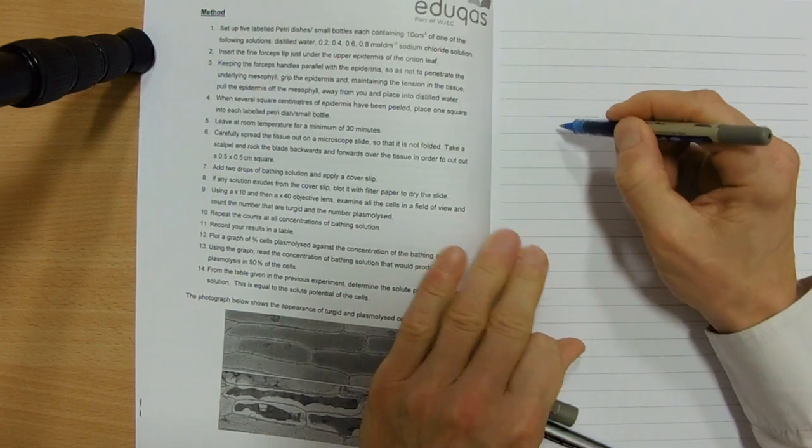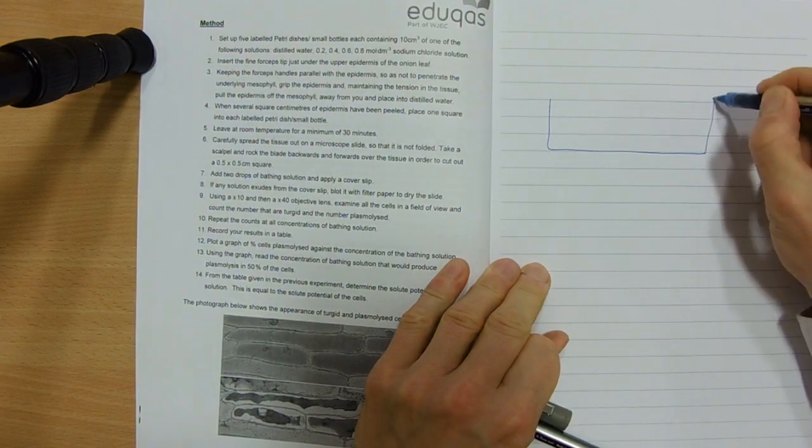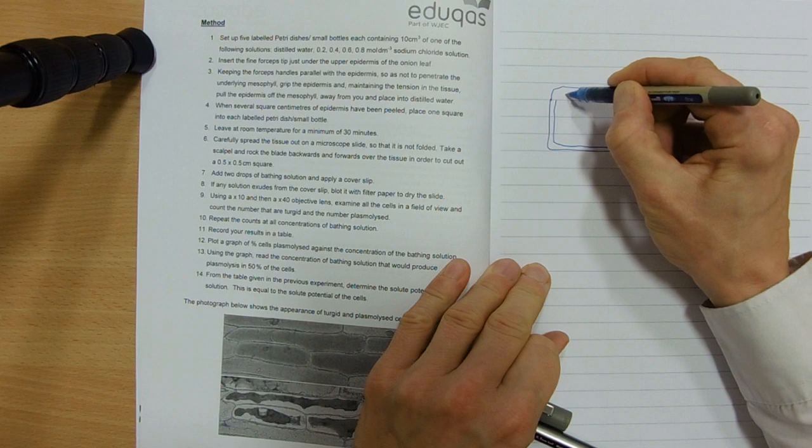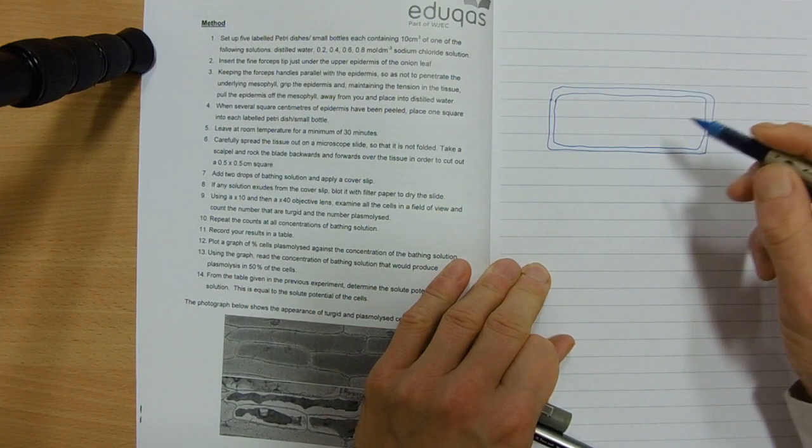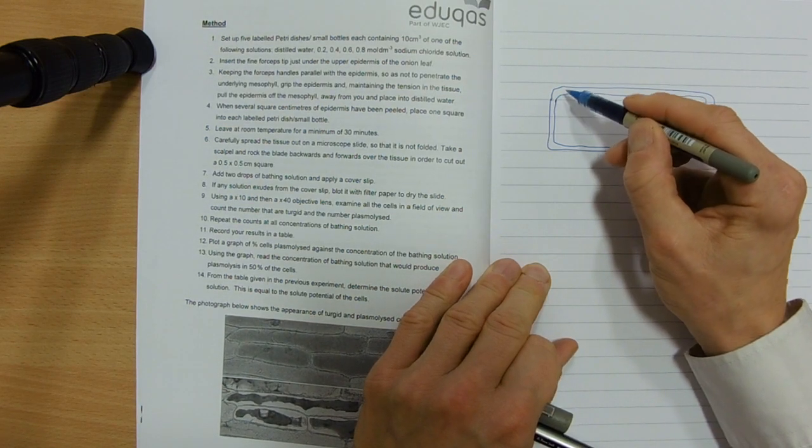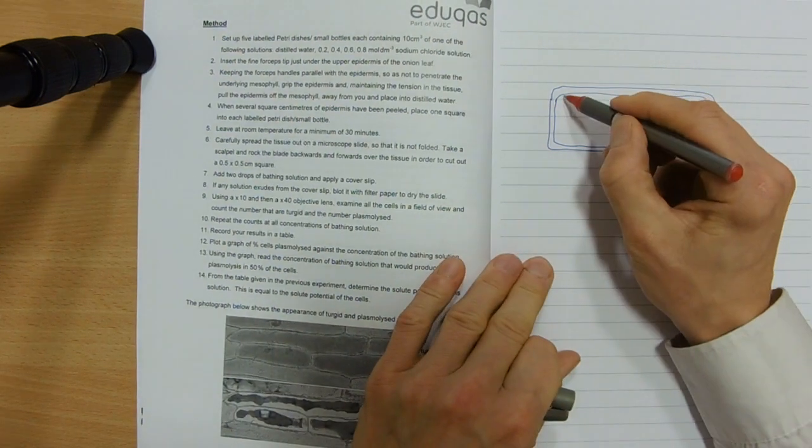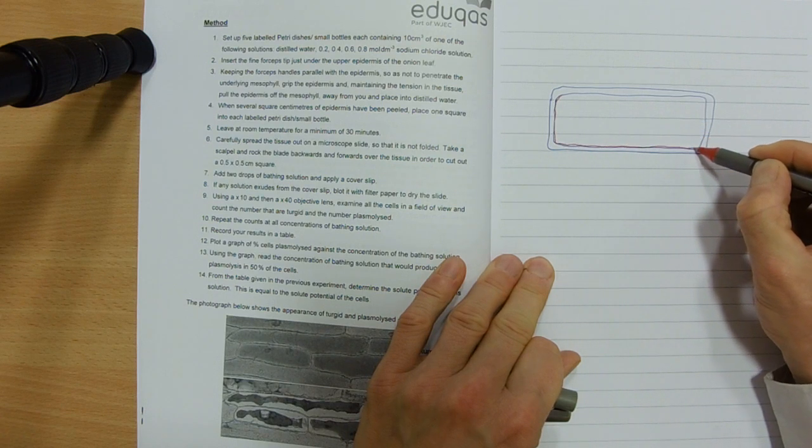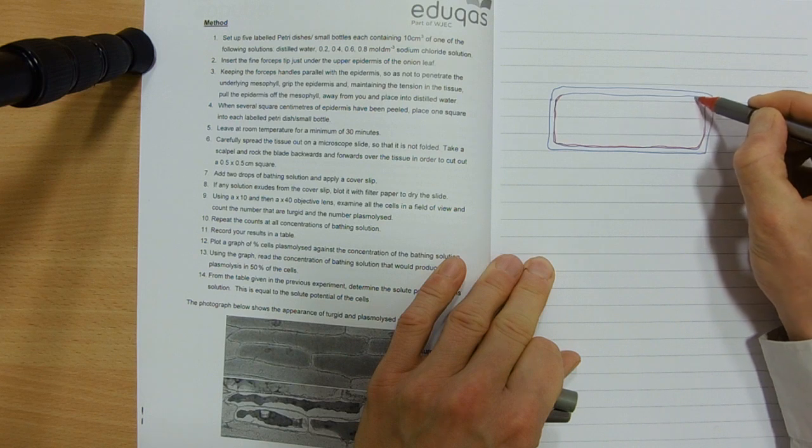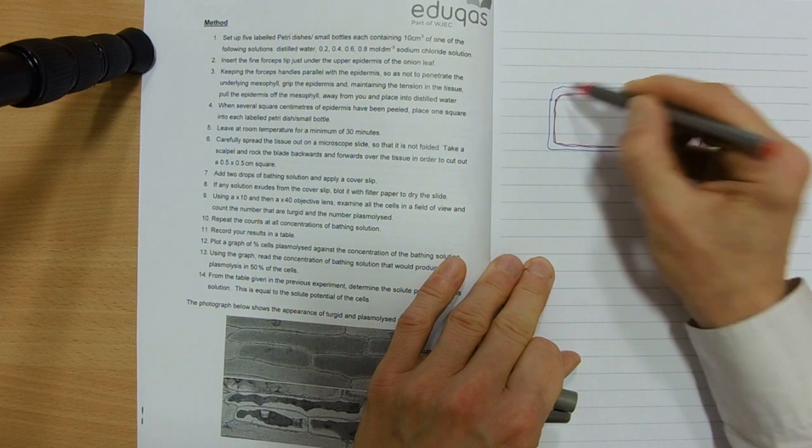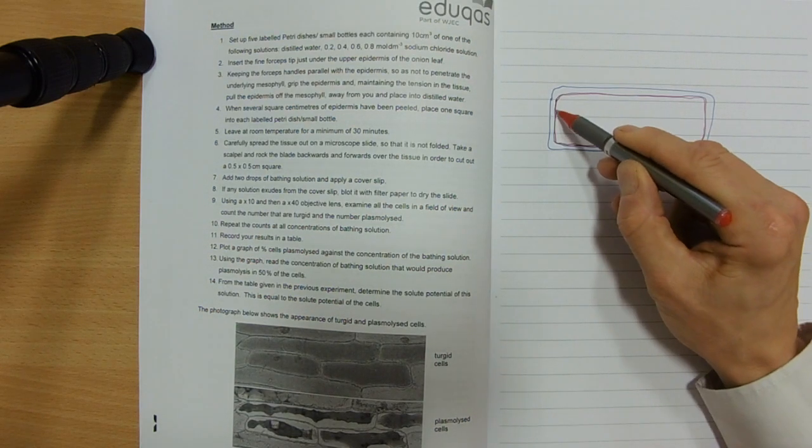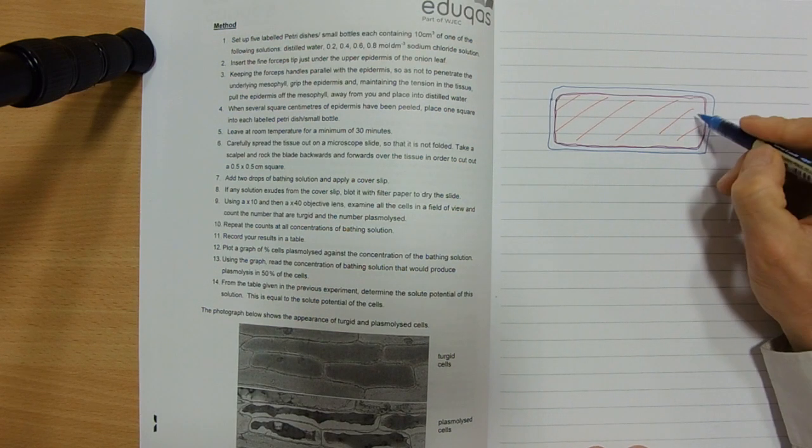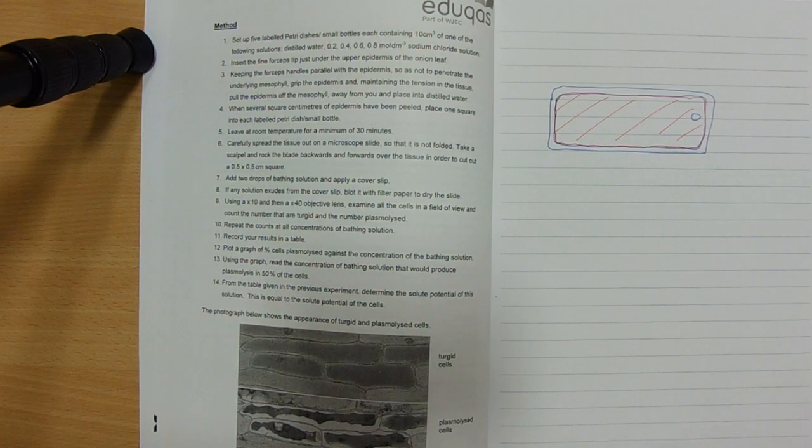So if we've got cells, let's draw a plant cell, an onion cell, and let's have a cell wall, and then inside that we're going to have a cell membrane. I'll do that in red. So in this instance, the cell membrane is right up against the cell wall. And inside there, that's our cytoplasm, and we might have a nucleus or something inside there.